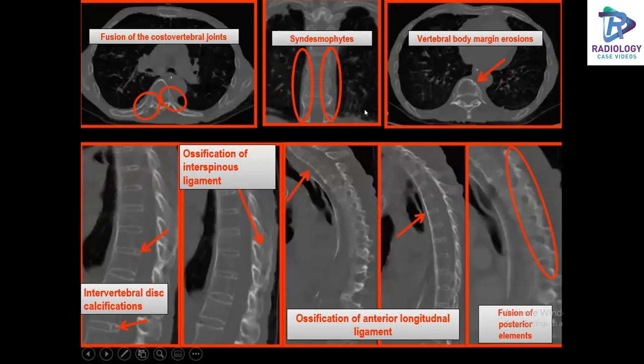CT sections in bone windows show fusion of the costovertebral joints, syndesmophytes, vertebral body margin erosions, intervertebral disc calcifications, ossification of the interspinous ligament, ossification of the anterior longitudinal ligament, and fusion of the posterior elements.